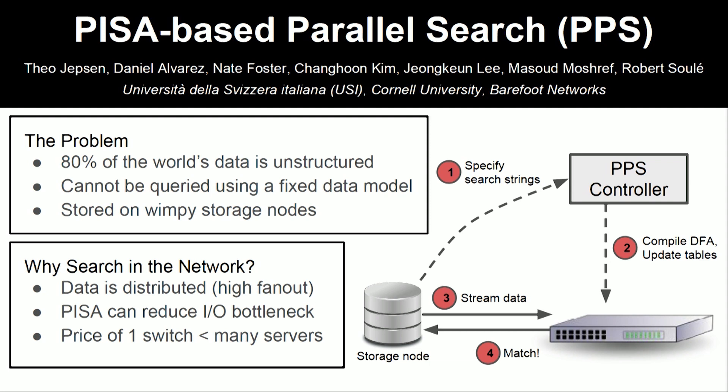We have these new programmable switches with a lot of I/O that are connected to all these storage nodes. With that observation, we came up with PISA-based parallel search — we search data flowing through the network on a programmable switch. In our demo, we have a Tofino switch hooked up to a server, searching through data stored on the server. One dataset is a log file; we also have a WikiLeaks dump of emails from the elections a few years ago — interesting stuff to search through at line rate.